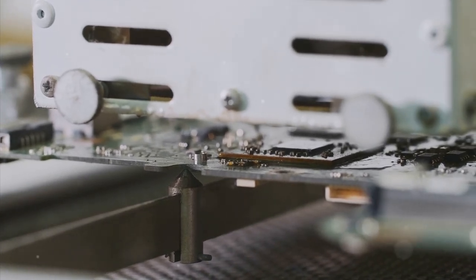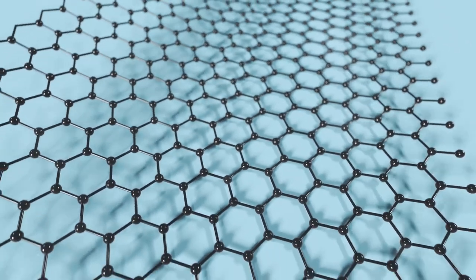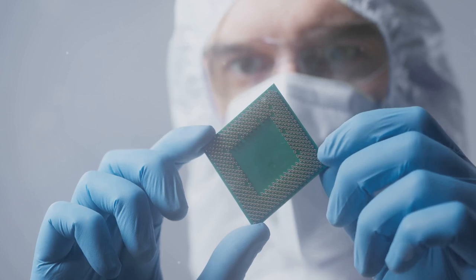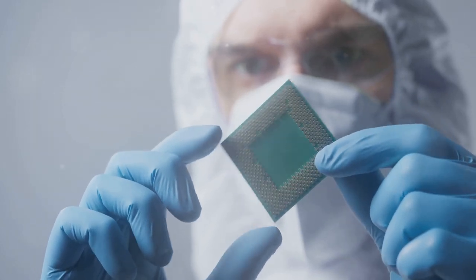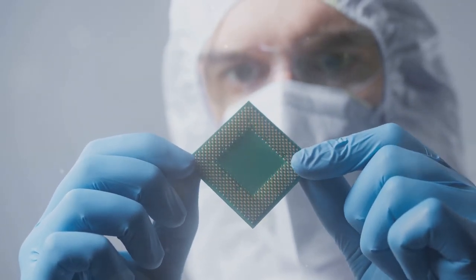Enter graphene. A two-dimensional material made from a single layer of carbon atoms, graphene is one of the most conductive materials known. The problem? It's not a semiconductor, which means it can't switch between conducting and insulating. Until now.